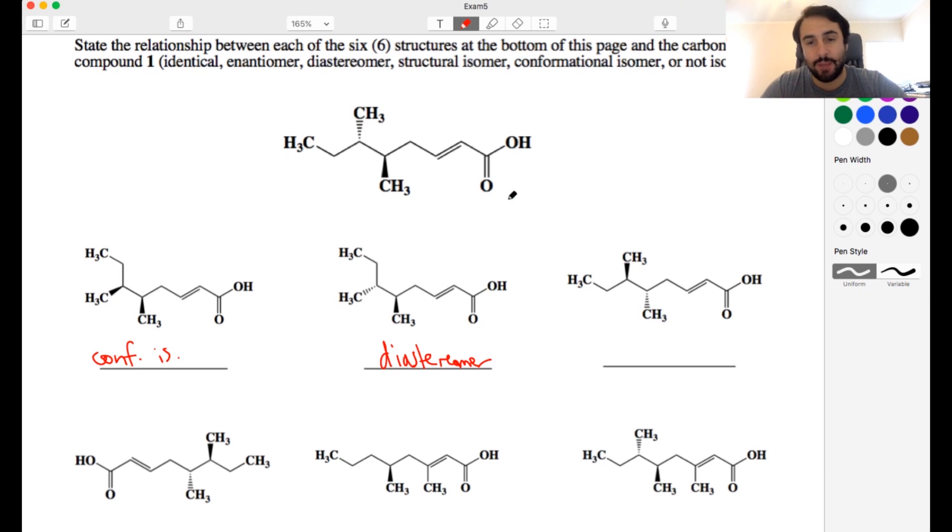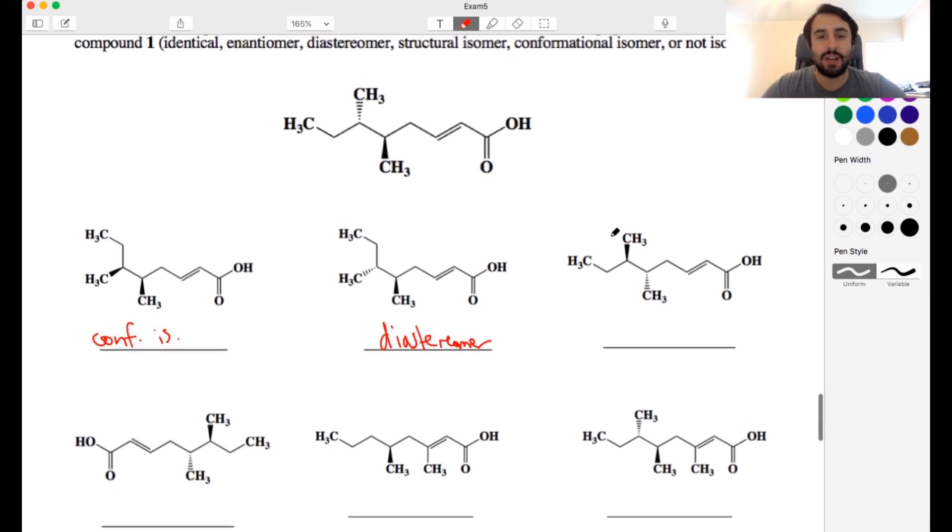So now in this one, we can go back to looking at the original. So we've got this dash is now a wedge and this wedge is now a dash. So we have inverted both chiral centers or all of the chiral centers. And when you invert all of the chiral centers in a molecule, you necessarily get the enantiomer of that molecule. So these are non-superposable mirror images.